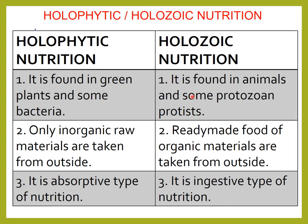Holozoic nutrition is found in animals — most of the animals and some protozoan protists. Protozoan means first animals. Protozoan protist is a single-celled eukaryotic animal which has a very defined nucleus.